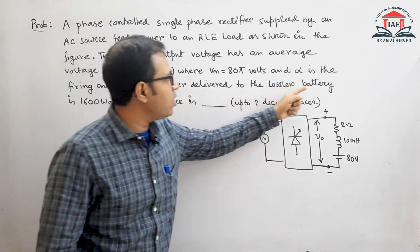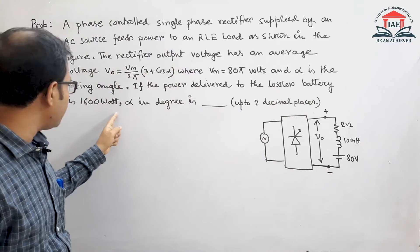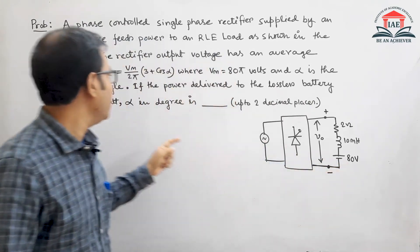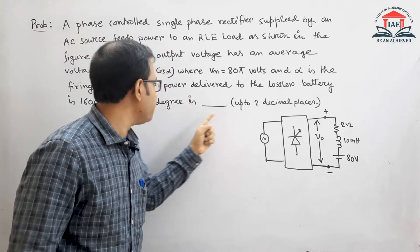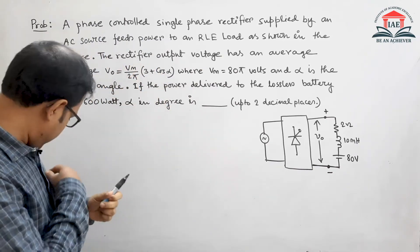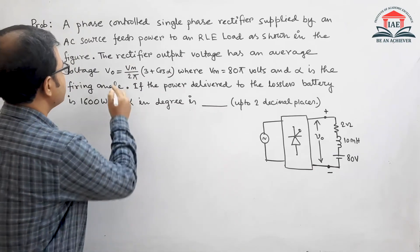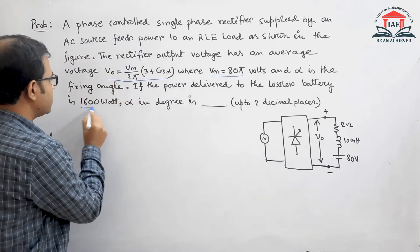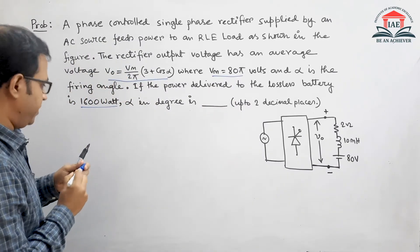If the power delivered to the lossless battery is 1600 watts, then you have to find the firing angle. So the things given in the numerical are this equation, Vm equals 80π volts, and 1600 watts.